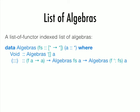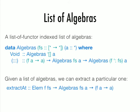Now that we have the data type, we want to do something with it. Since the data type is a fixed point of a list of functors, it's natural to use a list of algebras to process them. This Algebras data type is a list of functor indexed list of algebras. In the base case when the list is empty, we denote that by void. If you have an F algebra and an Fs algebra, you can put them together and get an F cons Fs algebra. This witness of membership also works as an index into the list of algebras.